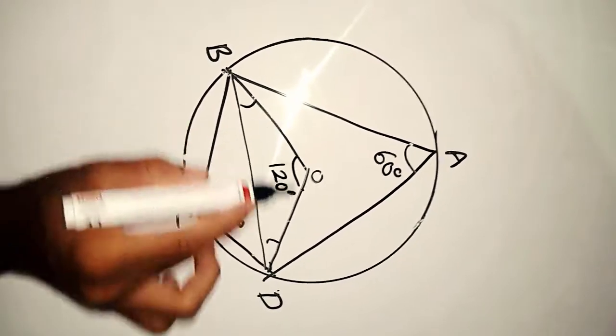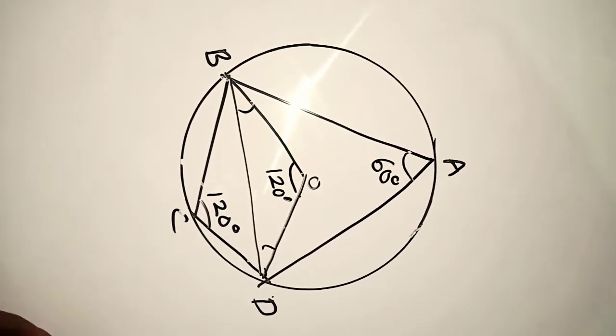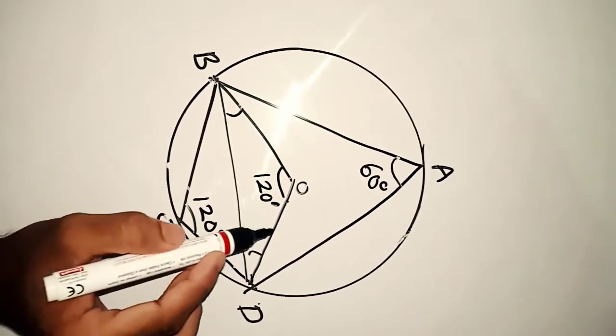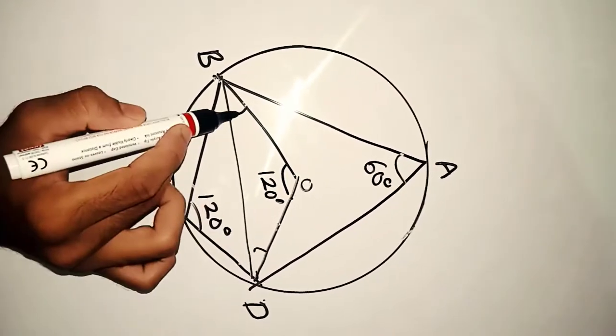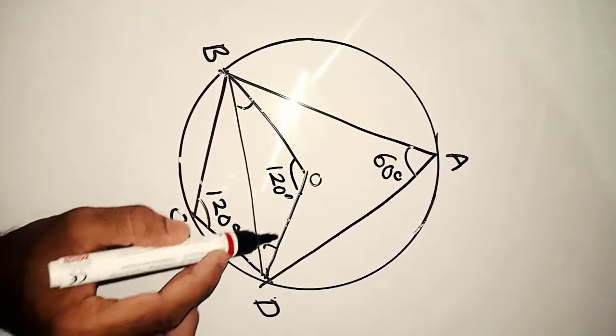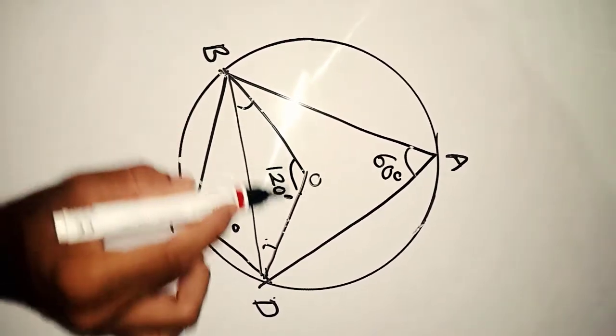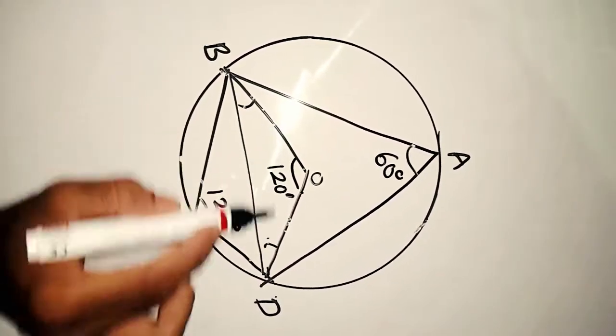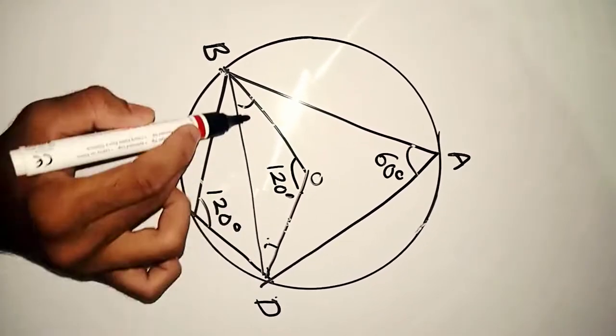The two are the isosceles triangle. Which is the two — that is, the two sides. The two sides are equal.